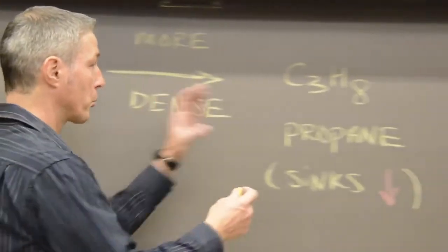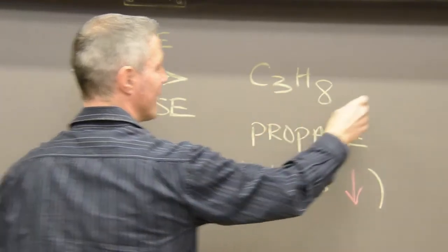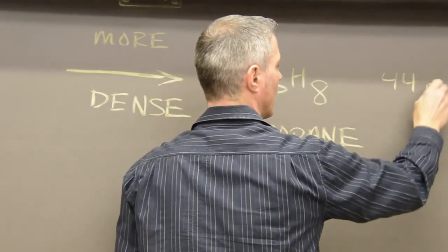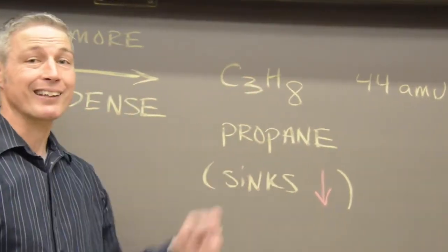Then we've got propane. Propane with three carbons, 12 each and 8, 44 atomic mass units. Propane sinks.